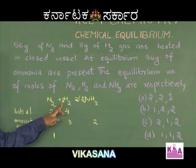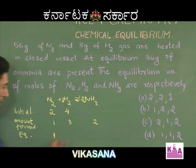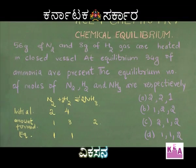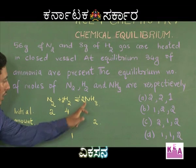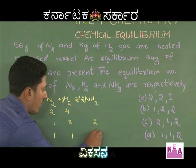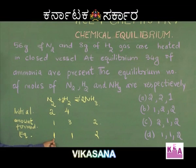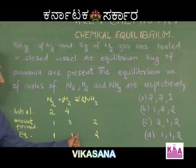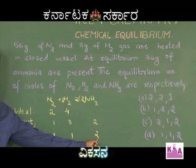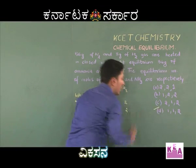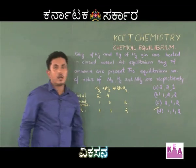The initial number of moles of hydrogen taken is 4, and 3 moles reacted, so 1 mole remains. And 2 moles of ammonia is formed. Hence, at equilibrium: 1 mole of nitrogen, 1 mole of hydrogen, and 2 moles of ammonia will be present. Hence, option D is the right answer.